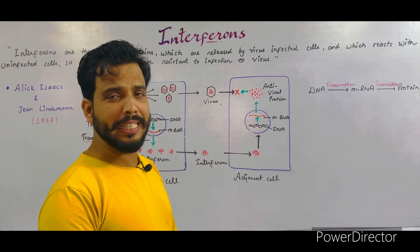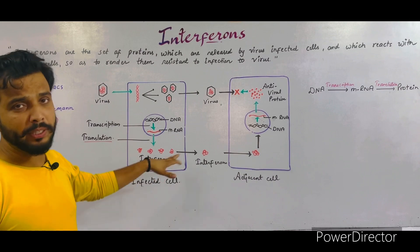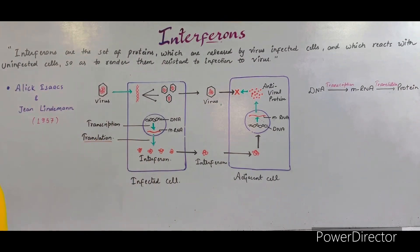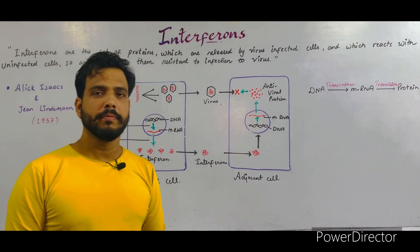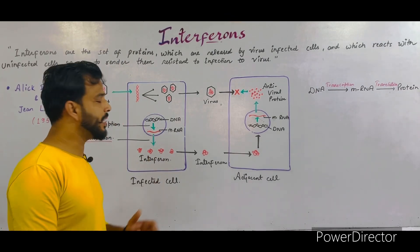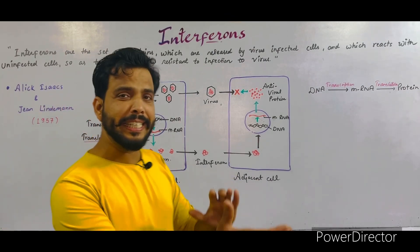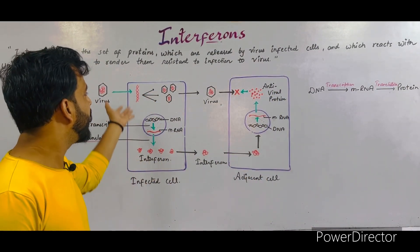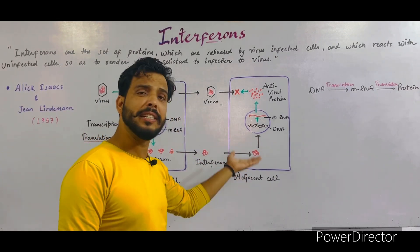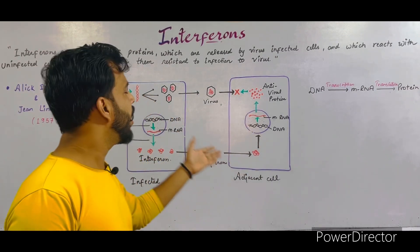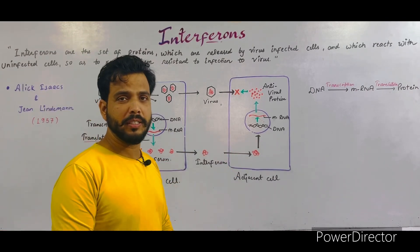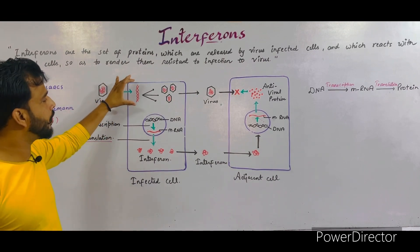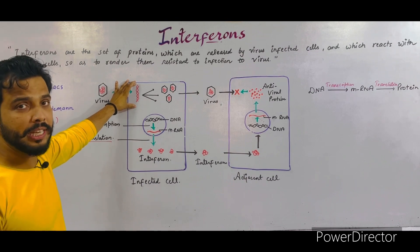Our diagram is ready. I will now explain in detail about interferons. There are two cells. One cell is infected by the virus, while the other adjacent cell, present near the infected cell, is totally unaffected by the virus. As you can see in the diagram, this is the virus. This virus attacks a cell and releases its nucleic acid into the cell.